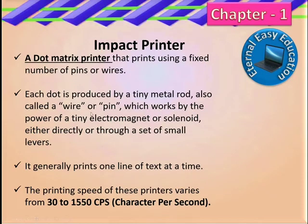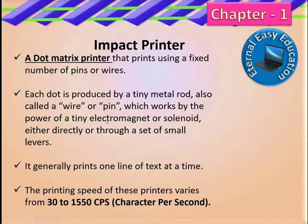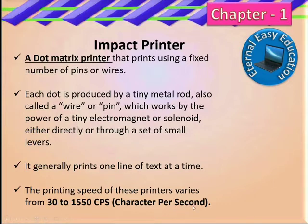This is the wire or pin mechanism. It is powered by a tiny electromagnet or solenoid, either directly or through a set of strong levers. When the pin fires, a dot is formed. A combination of dots forms a letter. It generally prints one line of text at a time. The speed is 32,550 characters per second.